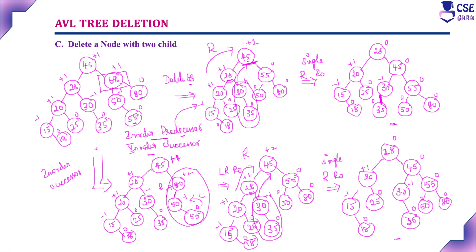Whenever you are deleting a node with two children, there are two replacement options: in-order predecessor — the largest element in the left subtree — or in-order successor — the smallest element in the right subtree. Both cases are correct; you can implement either one. After replacing, check the balance factor everywhere and apply the appropriate rotation to convert any unbalanced subtree into a balanced one. This is all about deletion in AVL trees.